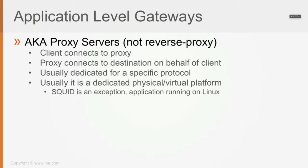We've seen this before when speaking about web security appliances. The client connects to the proxy, and the proxy connects to the destination on behalf of the client. Usually, application level gateways are dedicated for specific protocols, and they are a dedicated physical or virtual platform in most cases — for example, your web proxy or your SMTP gateway.